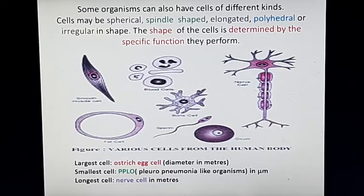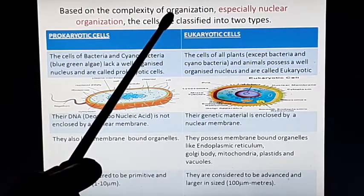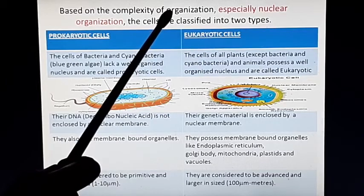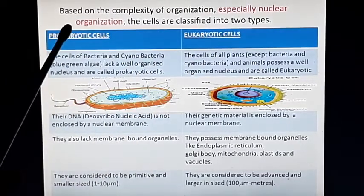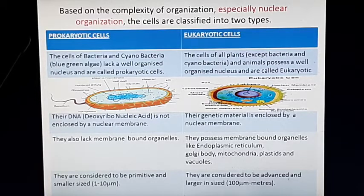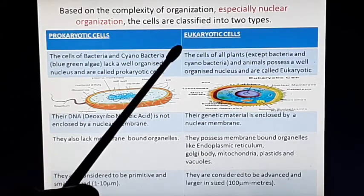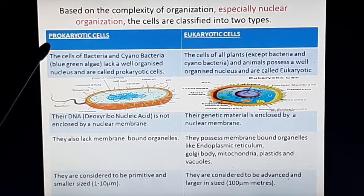Cells also vary on the basis of their complexity of organization. This complexity is based on nuclear organization — the nucleus, which is the brain of the cell and its controlling unit. The structure of that controlling unit helps in categorizing cells. On the basis of nuclear organization, we have divided cells into two categories: prokaryotic cells and eukaryotic cells.